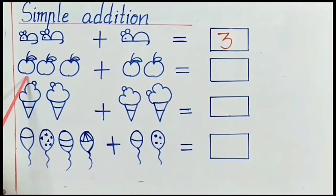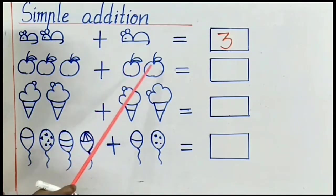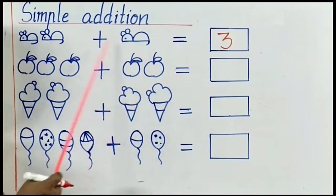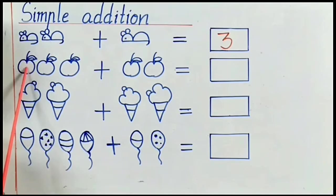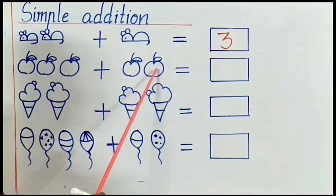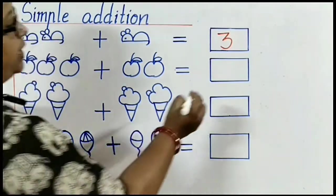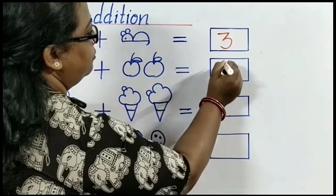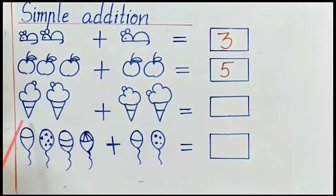Next line. What is it? Apples. Do you like eating apples? Very good. Let's count it. 1, 2, 3. And that side? 1, 2. Now, all together, how many apples are there? Let's count it. 1, 2, 3, 4 and 5. So, all together, there are 5 apples.